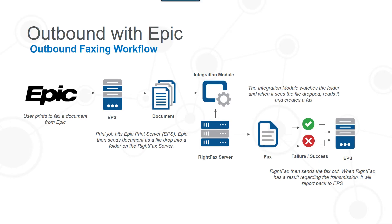On this slide you'll see that it's an outbound process that originates from EPIC. End users are on EPIC and from their EPIC system they have the ability to put in a username and a fax number and other patient information. From there it passes to the EPIC EPS server, which sends the document over to a network folder monitored by the RightFax integration module. The integration module's job is to monitor that folder, look at the tags, and based on the information in the tags, send the fax.